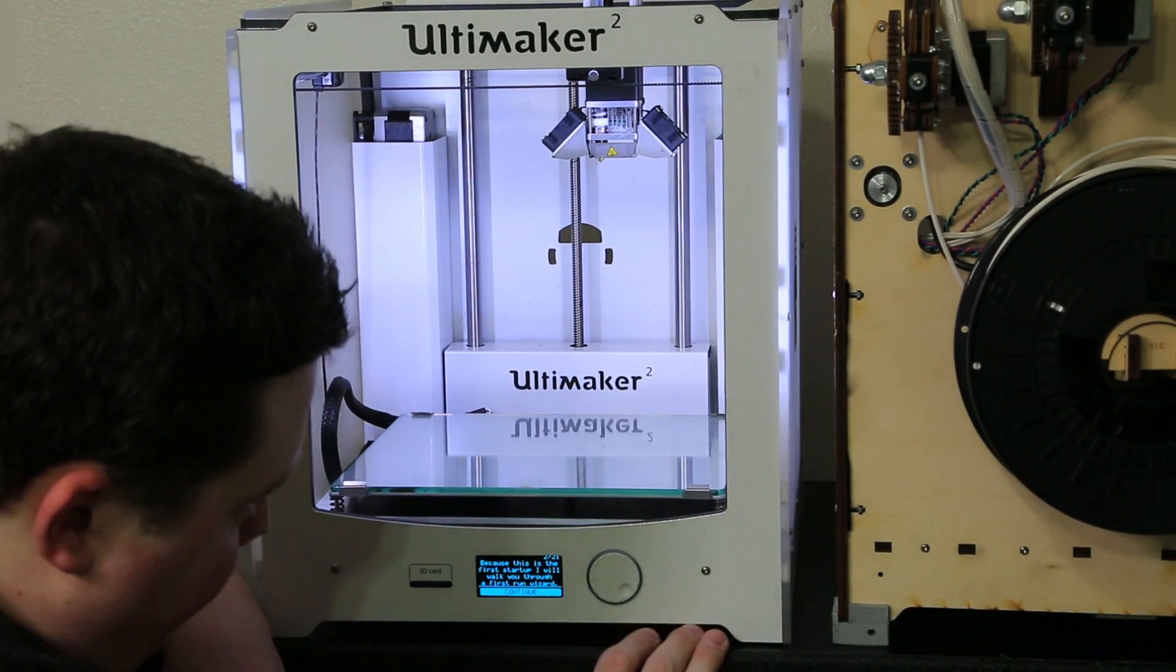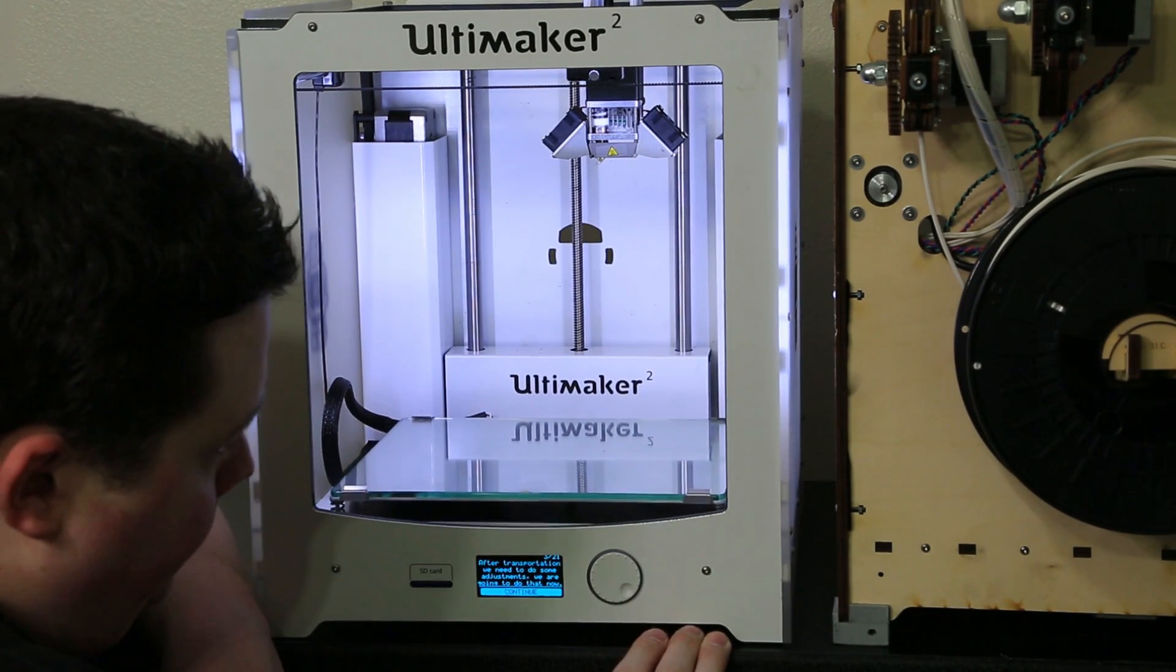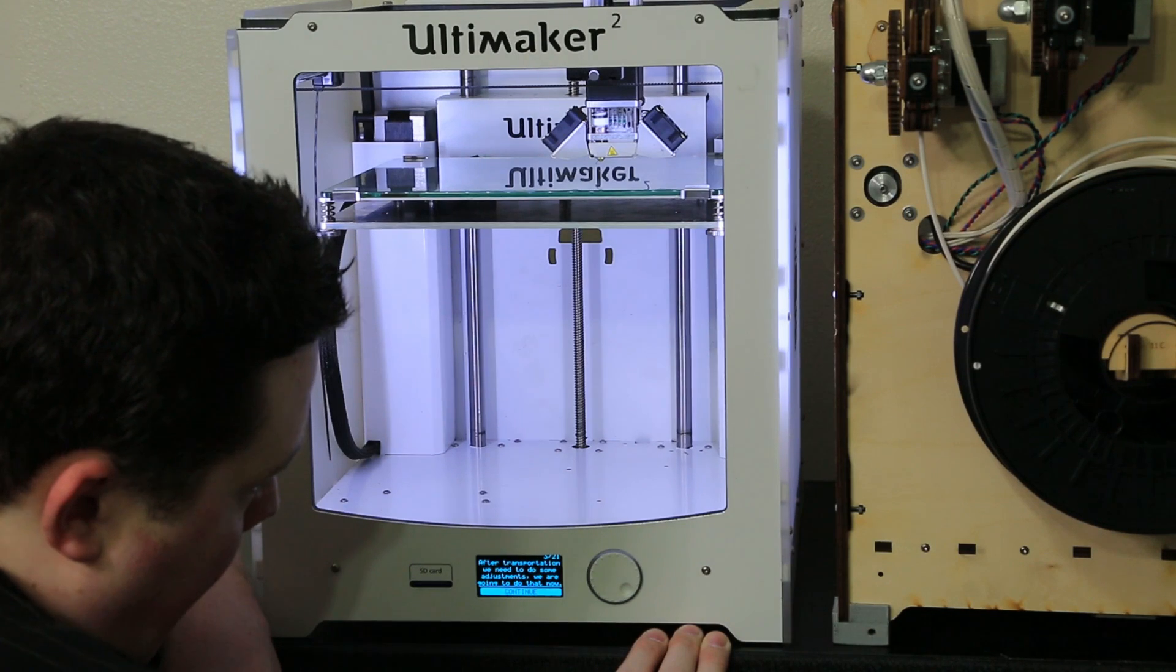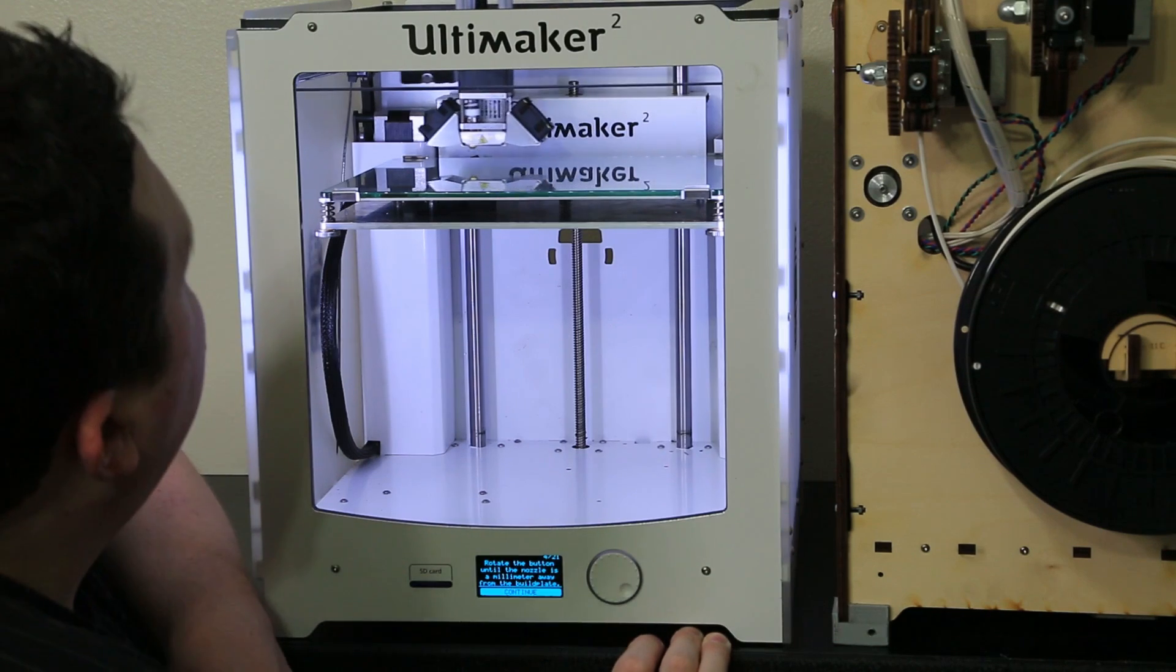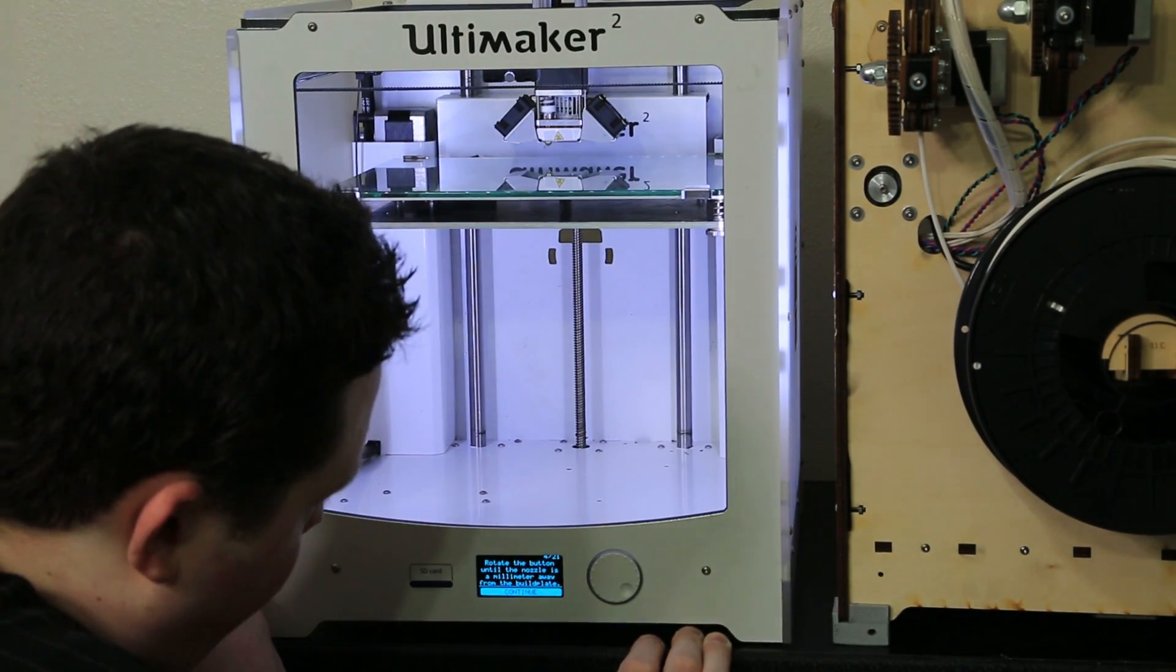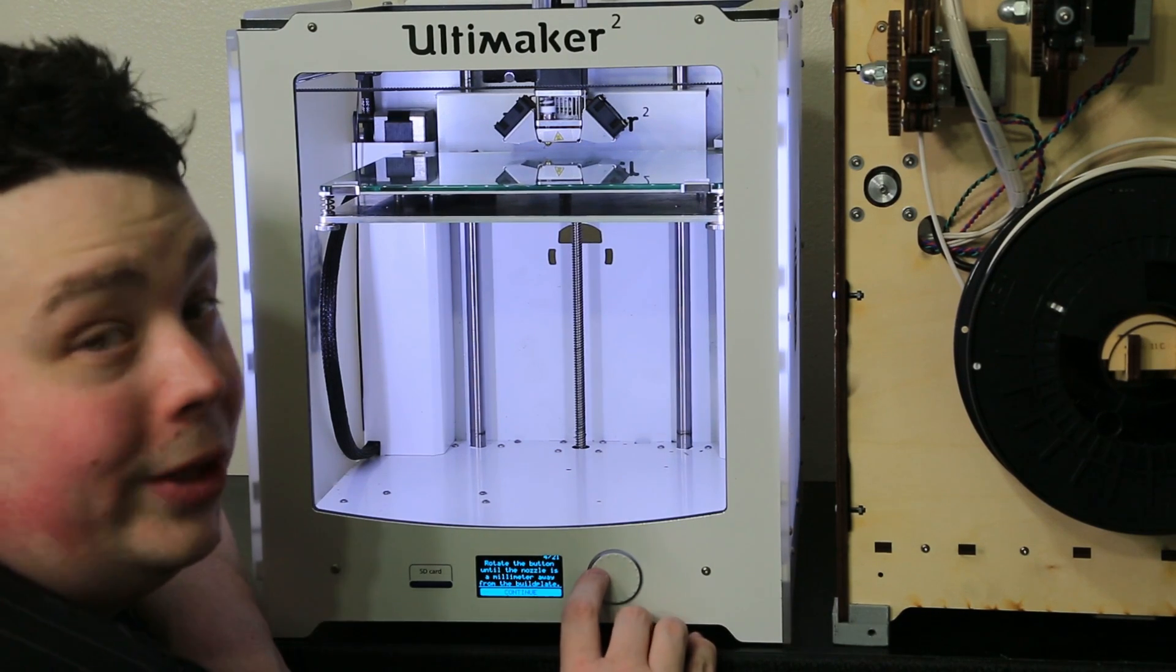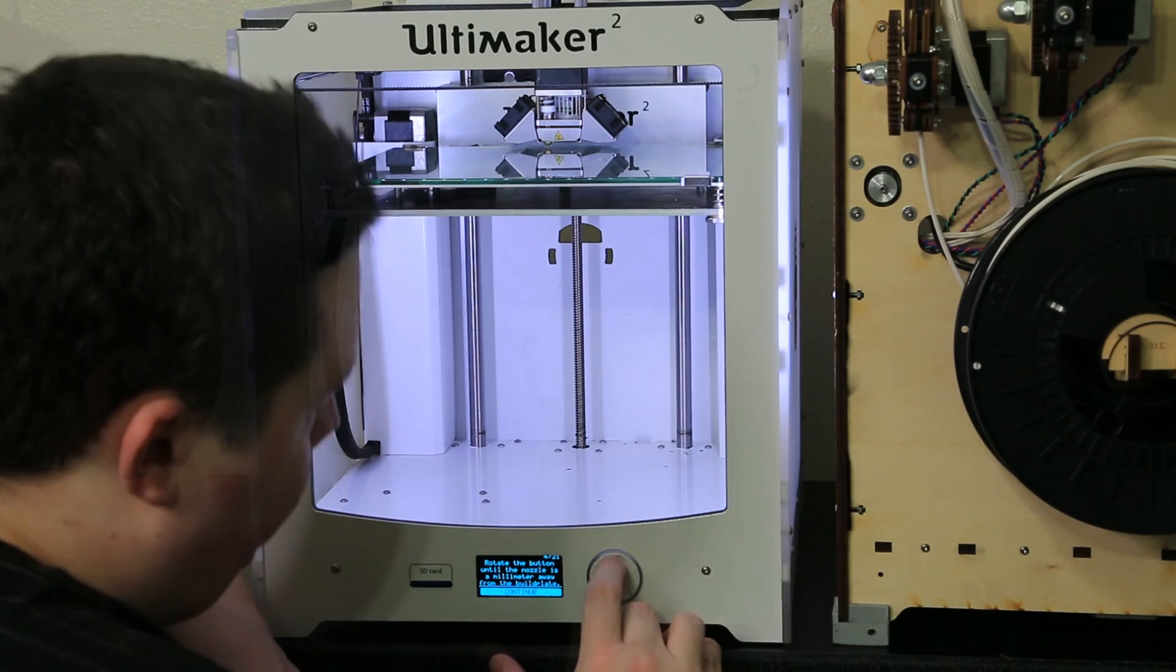Oh it's got a loud beep too. Because this is your first startup I will walk you through a first run wizard. Oh my god, that moves fast. Whoa. After transportation we need to do some adjustments. We are now going to do that now. Alright. It says rotate the button until the nozzle is a millimeter away from the build plate. That is cool guys. That looks about right.